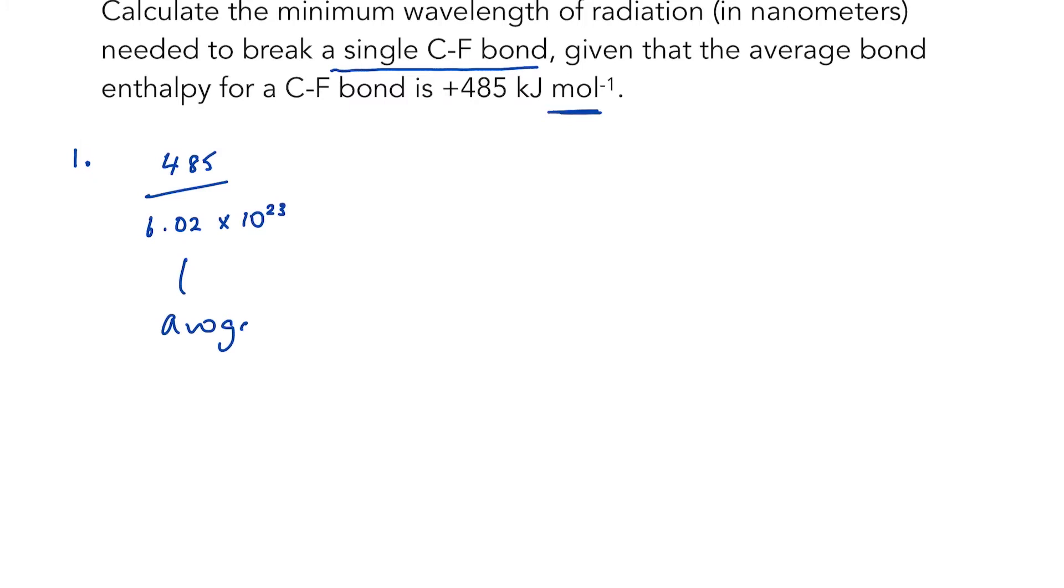Avogadro's number tells us the number of things, in this case bonds, in a mole, and it would be on your data sheet. This is a good example of the type of A-level question where you really need to plunder your knowledge from across the syllabus or curriculum in order to solve a problem. So when I plug that into my calculator, it tells me that the answer is 8.06 × 10⁻²² kilojoules, and that is the amount of energy it takes to break a single carbon-fluorine bond.